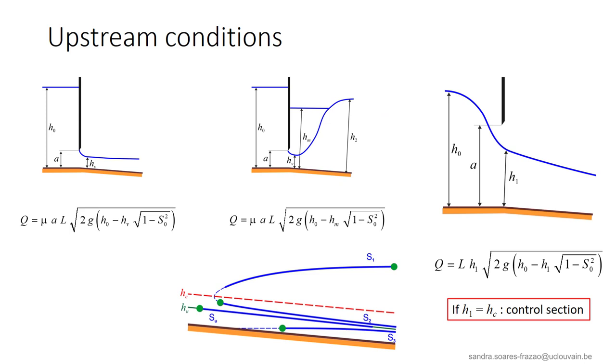Finally, we have the case where the gate opening becomes so large that the flow detaches from the gate. Two situations can occur. Either the depth H1 here at the section of the gate is the critical depth, and the channel downstream is a steep slope channel. In that case, we have a control section that is the starting point of S2 water profile, and does a supercritical flow in the channel.